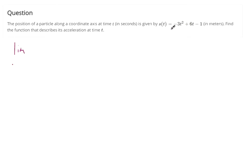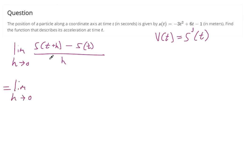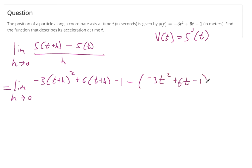Position of a particle is given by s of t. We said that v of t, velocity, is just the first derivative of s of t — it represents all the slopes of s of t. To find that, we can find the limit as h approaches 0 of s of t plus h minus s of t divided by h — our definition of a derivative. So s of t plus h means we plug t plus h everywhere we see a t. So this is going to be negative 3 times t plus h squared plus 6 times t plus h minus 1. Then we subtract s of t, in parentheses because we need to subtract the whole s of t, and divide by h.